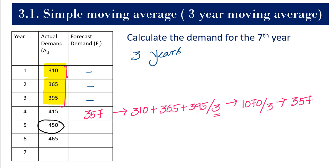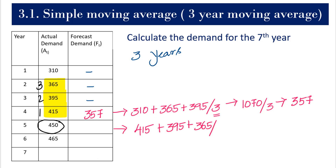To calculate the demand for the fifth year, we need three years of data. We leave 310 behind and take the next three-year window: 415 plus 395 plus 365, divided by 3. This gives us 1175 divided by 3, and the final answer is 392 units.